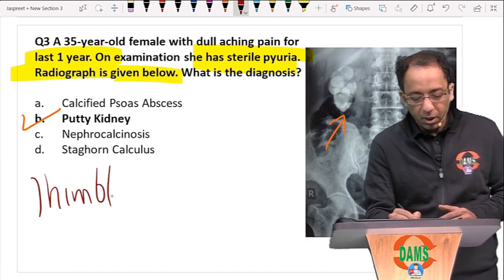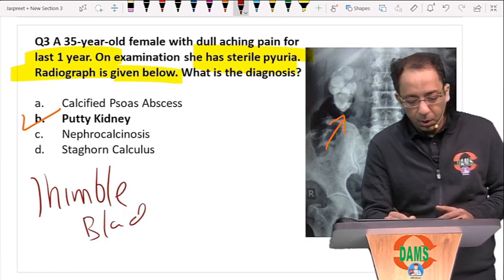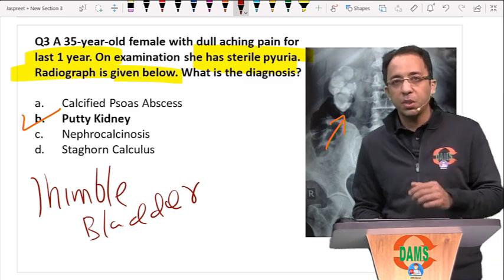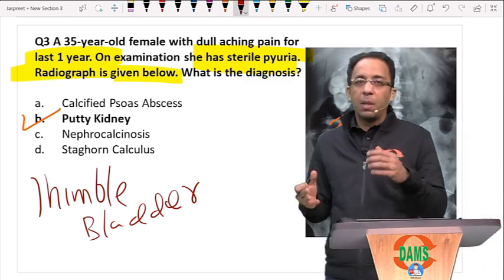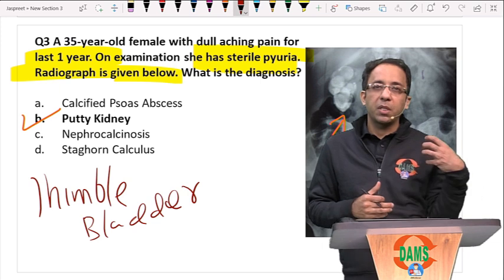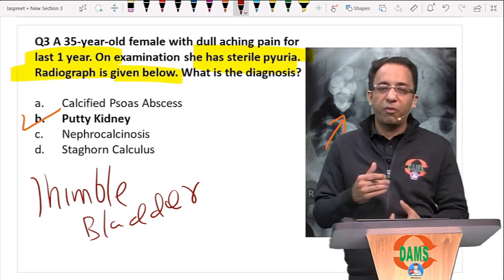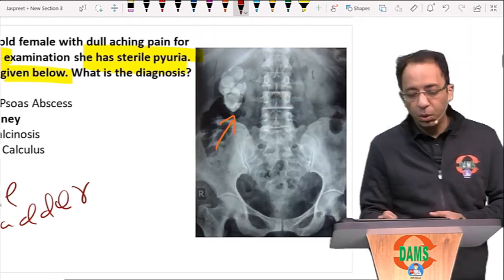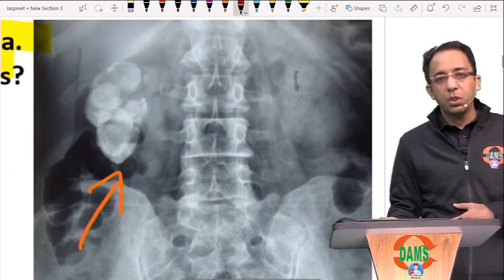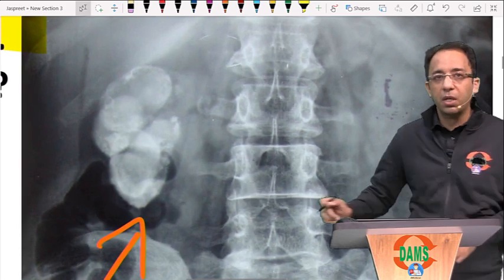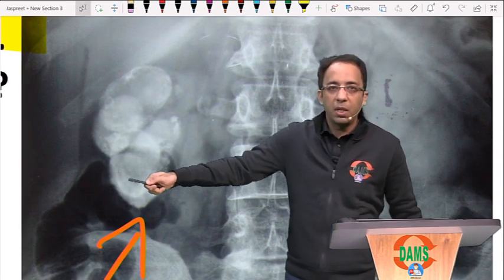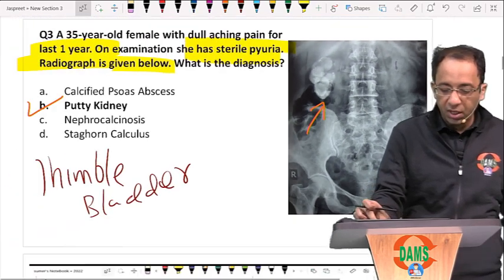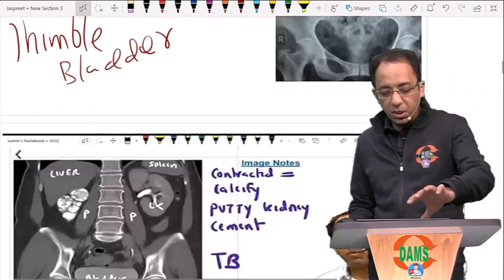Other features of urinary tract tuberculosis that may be asked: thimble bladder, beaded ureters, pipe-stem ureters, sawtooth ureter, golf-hole ureteric orifice. Usually they show you an X-ray or CT scan with a calcified kidney. Be very clear with this image and be able to answer in the exam.